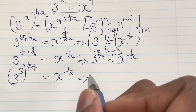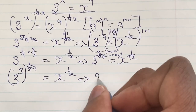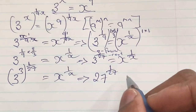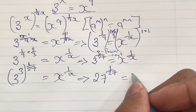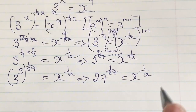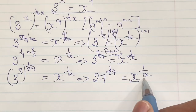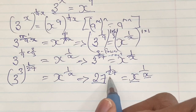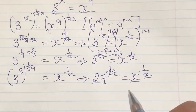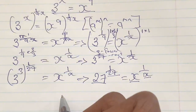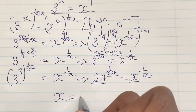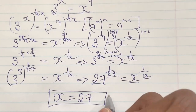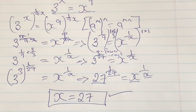Rewriting this, we have 27 to the power of 1 over 27 is equal to x to the power of 1 over x. We can see that 27 appears in the base and also in the denominator of the power, matching the pattern of x in the base and x in the denominator of the index. Therefore it is safe to say that x is equal to 27.